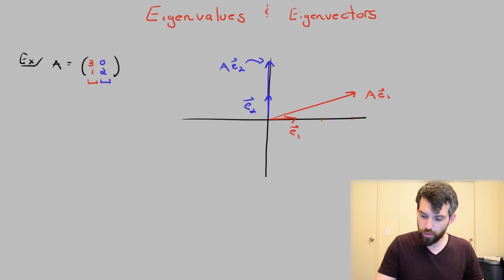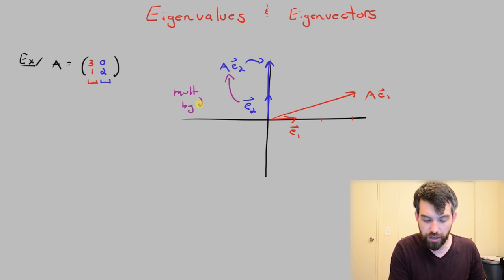Indeed, it appears that what's really going on here between E₂ and AE₂ is a multiplication by a factor of 2.